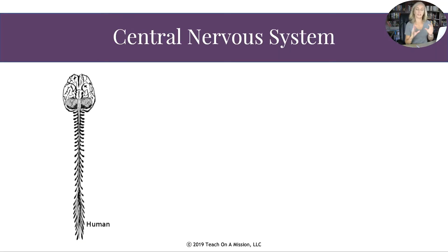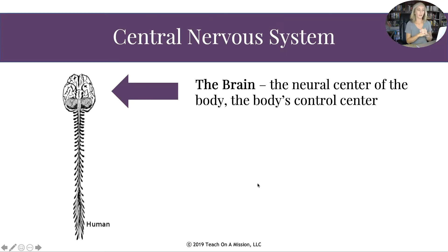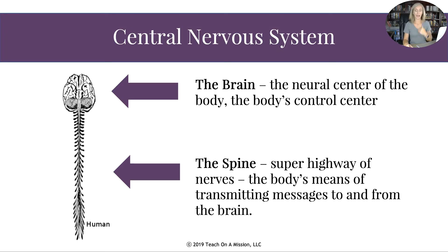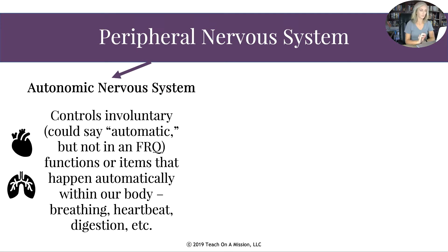The brain is the neural center and control center of the body. The spine is the superhighway of nerves — the body's means of transmitting messages to and from the brain. So when your brain wants your hand to write something, it communicates through the spine. Likewise, when you pick up the wrong end of your curling iron, the message goes through sensory neurons to the spine and up to the brain.